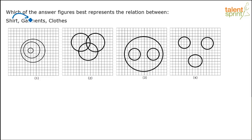Shirt is a type of garment, and garment is a category within clothes. Shirt belongs to garments and garments belong to clothes. That way, you can say that a shirt is also a cloth, because shirt is in garments and garment is inside clothes. All the shirts are garments, but not all the garments are shirts. Similarly, all the garments are clothes, but not all the clothes are garments — for example, a piece of cloth used for cleaning is in the clothes category.